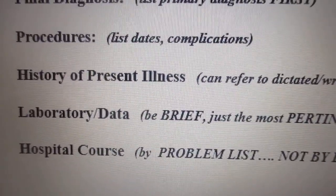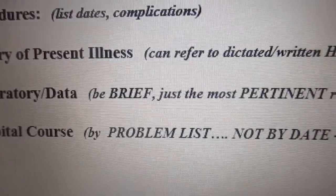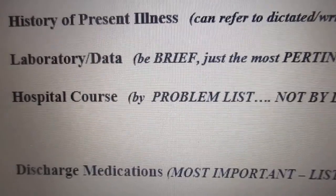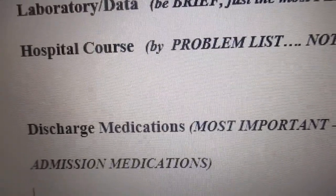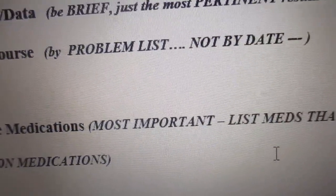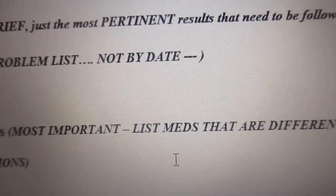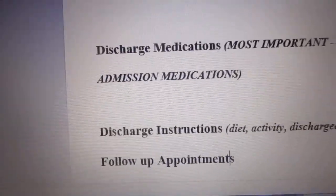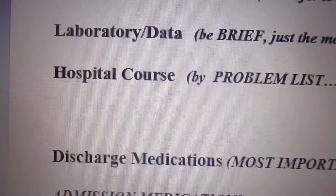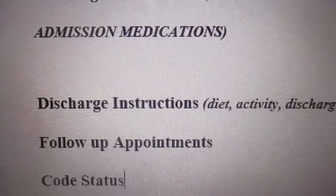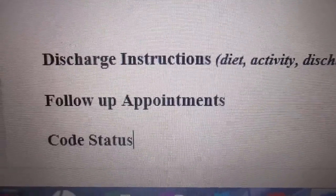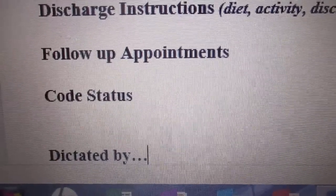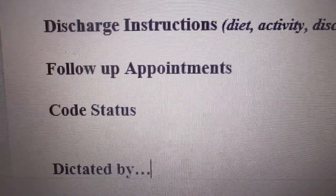Under 'Hospital Course' I have it organized by problem list, not by date, so you want the physician to go into detail about what was wrong with the patient while in the hospital. Then any discharge medications — most importantly, list meds that are different from when they came in. Discharge instructions, any follow-up appointments, and notice it also says 'Code Status.' The dictated-by line is at the bottom here, though some facilities put it at the top.